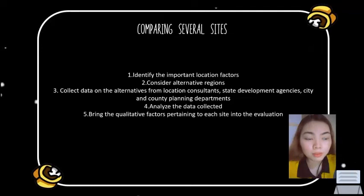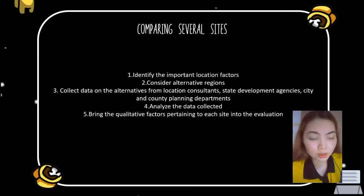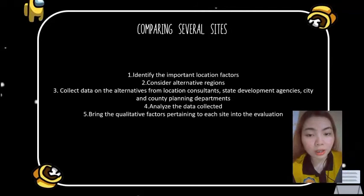Several factors that influence location positioning include the location of raw materials, proximity to the market, climate, and culture. Models for evaluating locations include cost-profit analysis, the center of gravity model, the transportation model, and factor rating. The second step is to consider alternative regions, then narrow the choices to alternative communities and finally to specific sites.